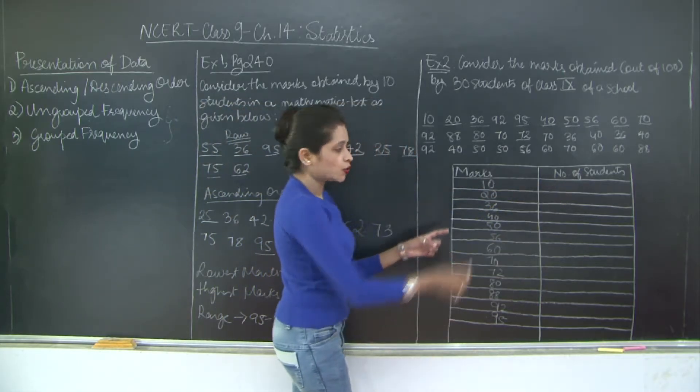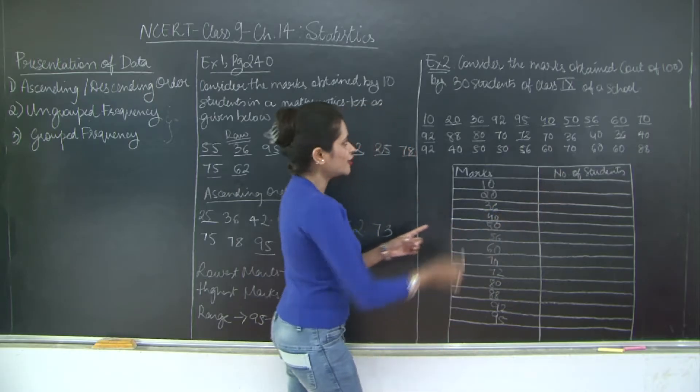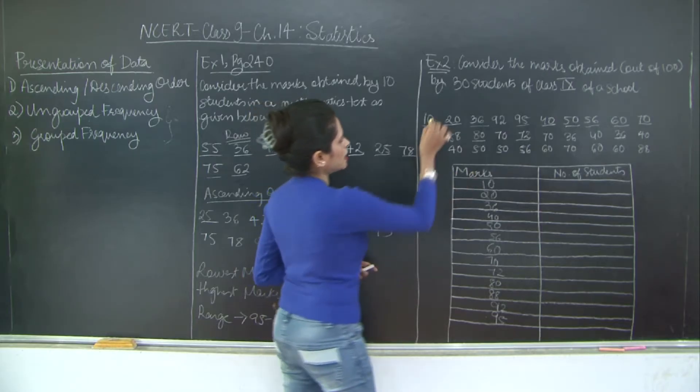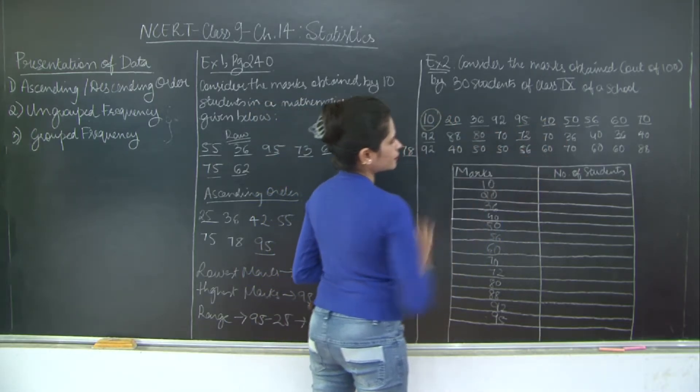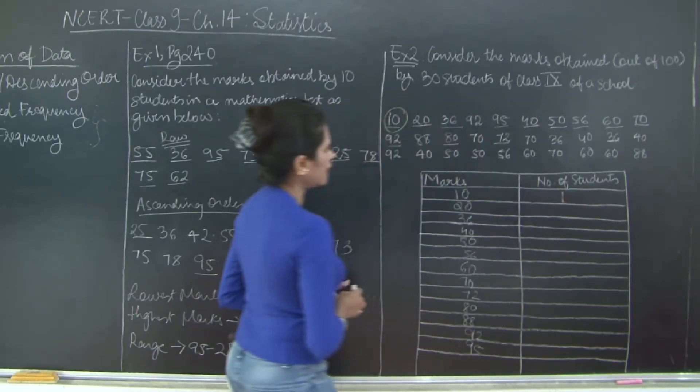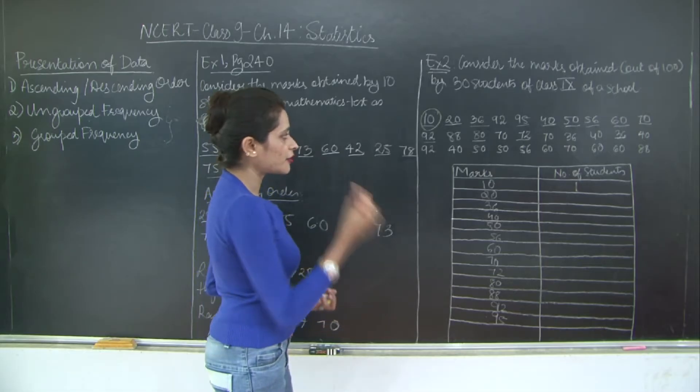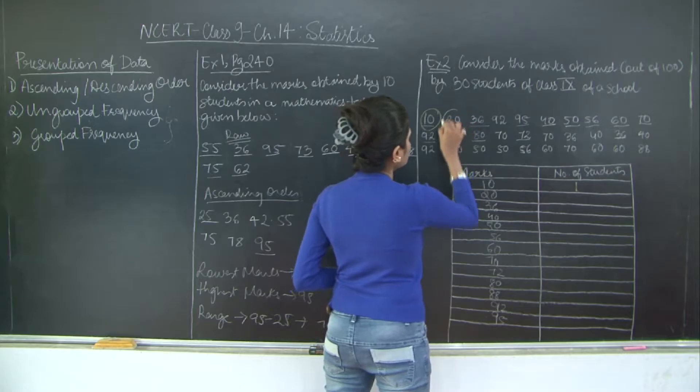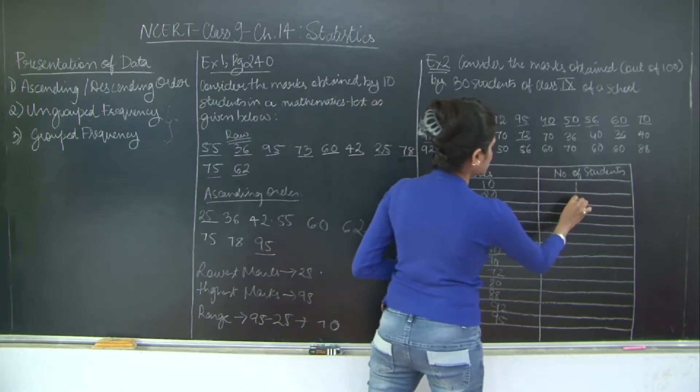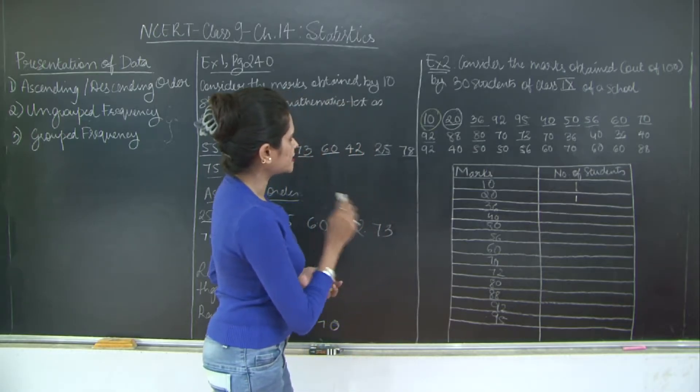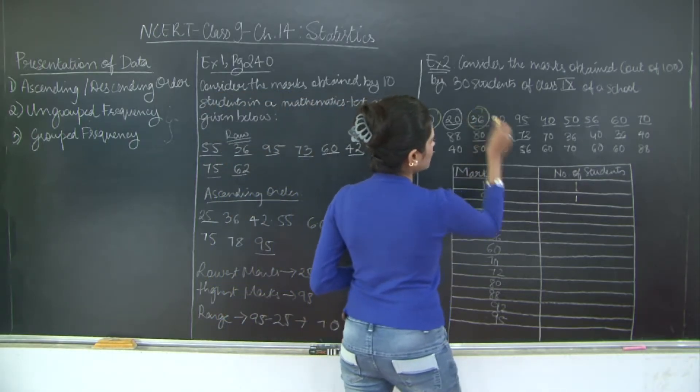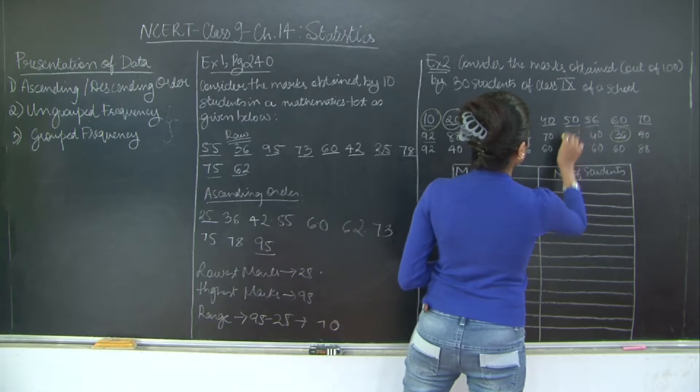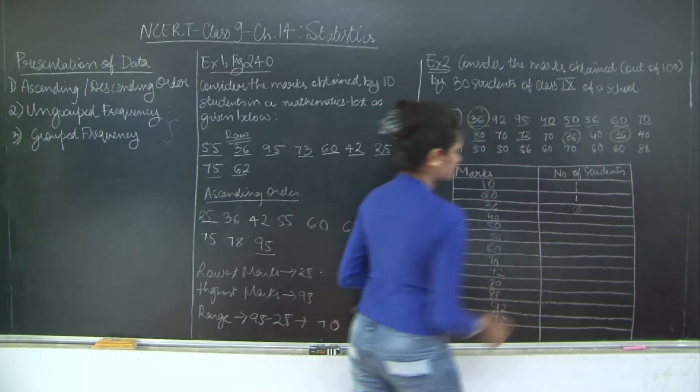Now we are going to say the number of students who secured 10 marks. So let's see the number. So I am going to use a different colored chalk. Number of students who secured 10 marks, there is just one student. So 1. Now in 20, let's see the number of times that 20 is there. That is the number of observations, right? So you have 20 just again once. Then let's see for 36. 36 is present 1, 2, 2 times and another one 3 times.